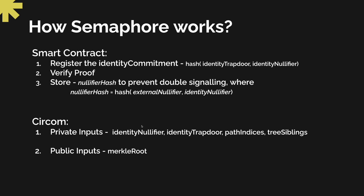The identity nullifier and identity trapdoor together form a unique identity of the user. We take a hash of these two and register it in the Merkle tree. Through the circuit, we prove that the user is part of the identity set registered as leaves of the Merkle tree. We recompute the root and match it with the root provided as part of the public input — if the root matches, the user belongs to that particular set.